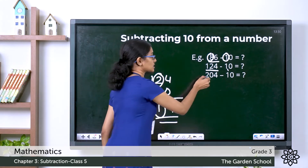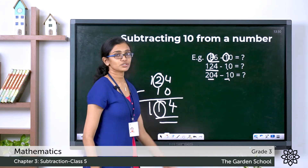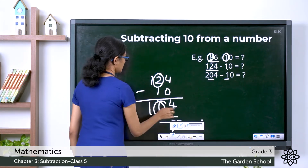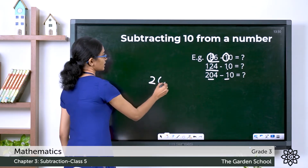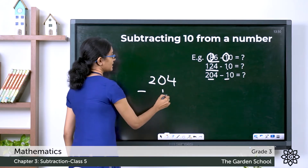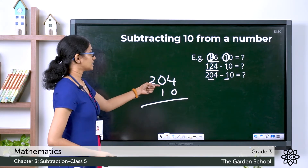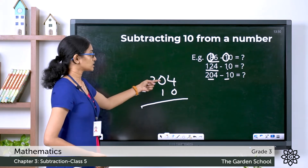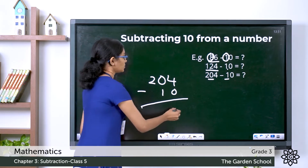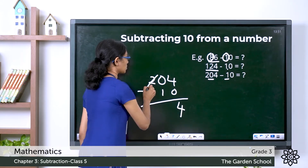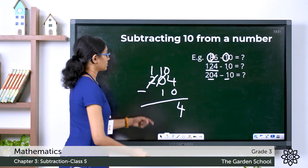What if the tens digit in the minuend is less than the tens digit of the subtrahend? Let's see that example. Here: 204 minus 10. Will there be change only in the tens digit? No, because in this minuend the digit in the tens place is less than the digit in the subtrahend. So we have to regroup, which will make this one 10, and now we can subtract.